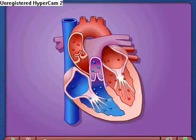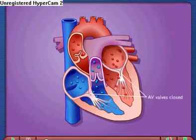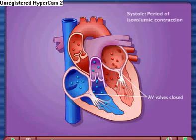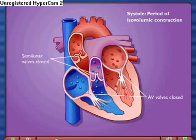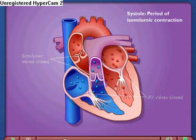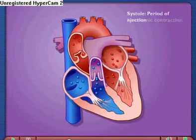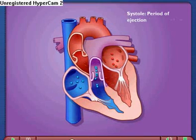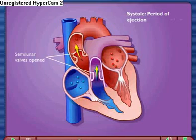Ventricular contraction causes the atrioventricular valves to close, which signals the beginning of ventricular systole. The semilunar valves were closed during the previous diastole and remain closed during this period. Continued ventricular contraction increases pressure in the ventricles above the pressure in the aorta and pulmonary trunk, causing the semilunar valves to open.